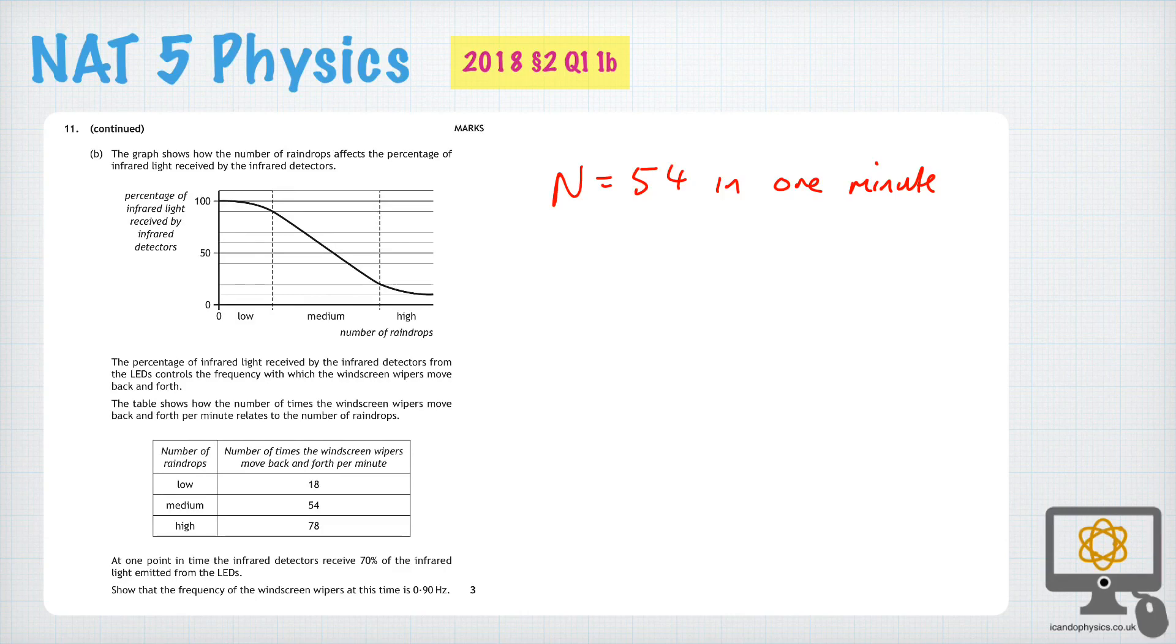So the question is, show that the frequency is 0.90 Hz. Well, how does frequency relate to number of vibrations? Frequency is n over t, where n is the number of vibrations and t is the time.